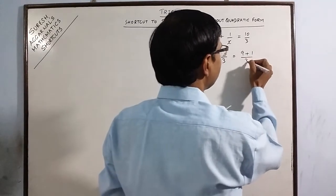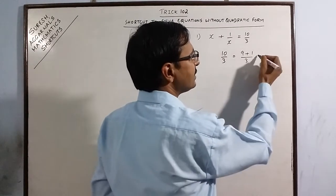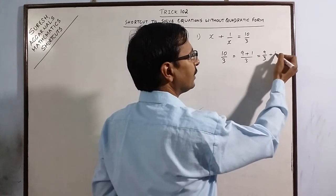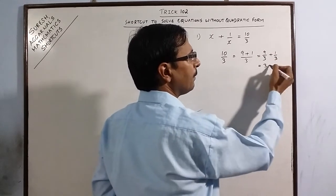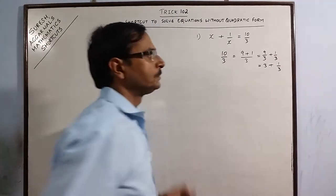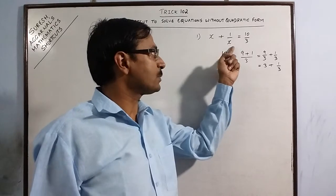And once you do that, half of your work is done. Denominator is 3. Now just split the denominator, this will come out to be 3 plus 1 by 3. Now see, on the left hand side, you had one term and its reciprocal added together.